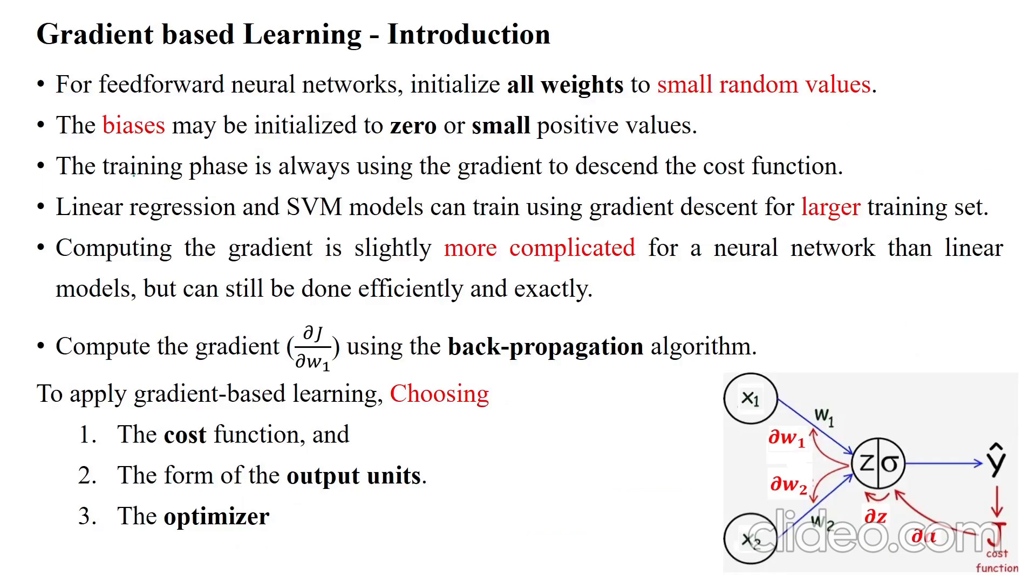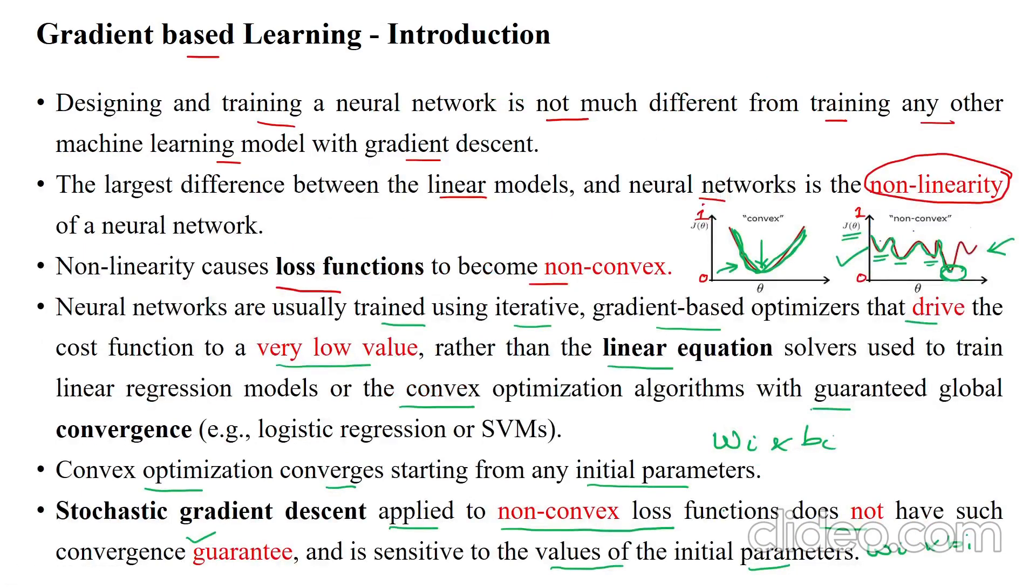For feedforward neural networks, initialize all weights to small random values due to the non-convex issue.